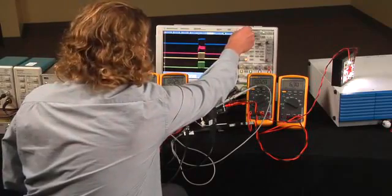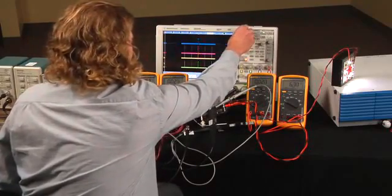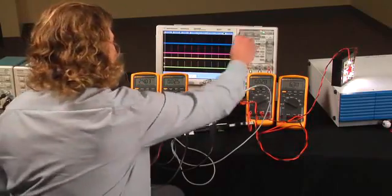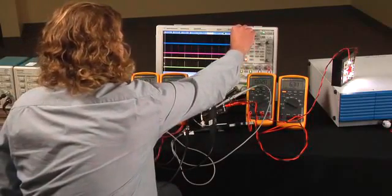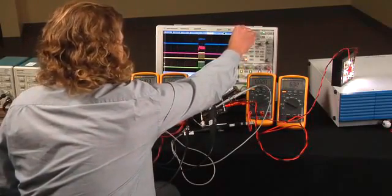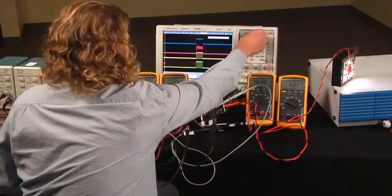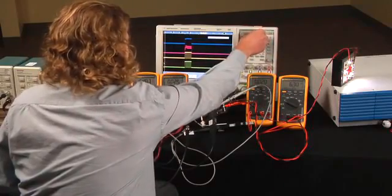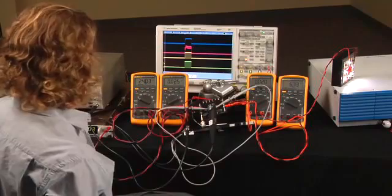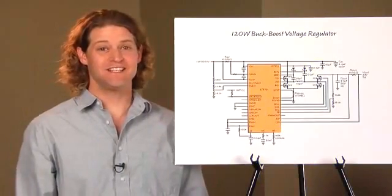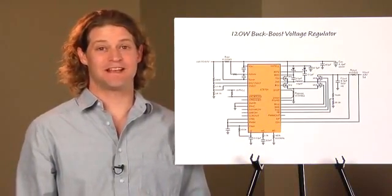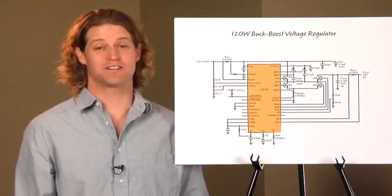The LT3791 pulses the load at a high enough frequency that we cannot see. Proprietary PWM dimming smarts inside of the LT3791 help the LED current waveform maintain its rectangular shape for precision PWM dimming. It's easy to set up the 3791 as either a constant current or constant voltage source.